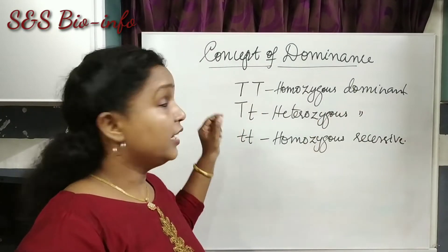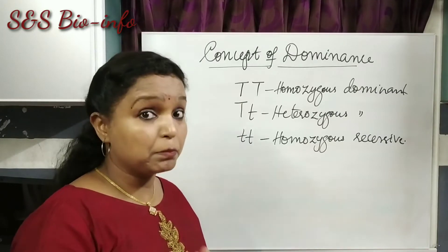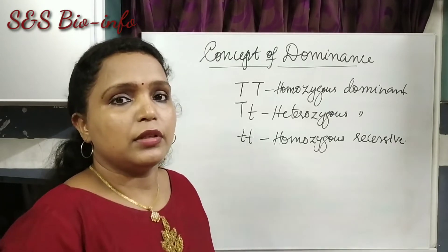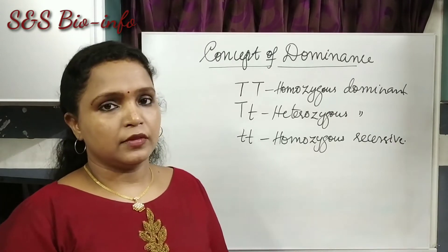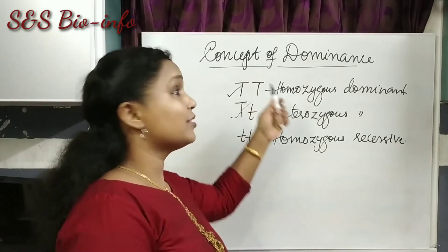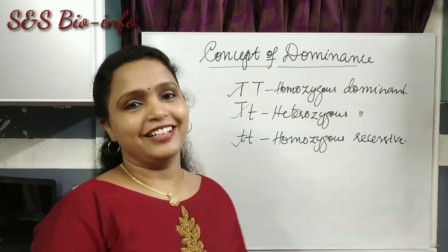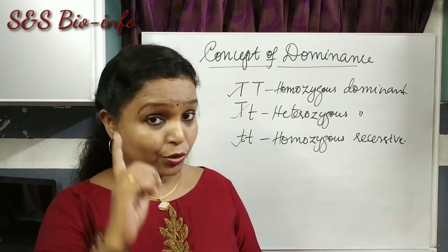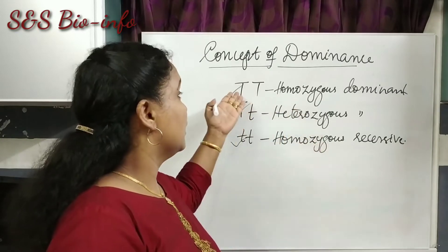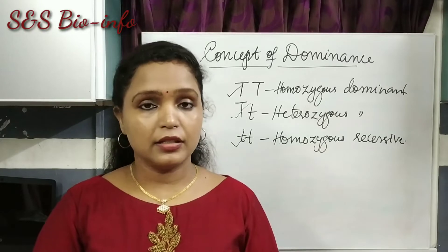Any one of these three conditions can be seen in a diploid organism to control a particular trait or character. For example, tallness in pea plants can be either homozygous dominant or heterozygous dominant, while dwarfness is definitely controlled by homozygous recessive alleles.